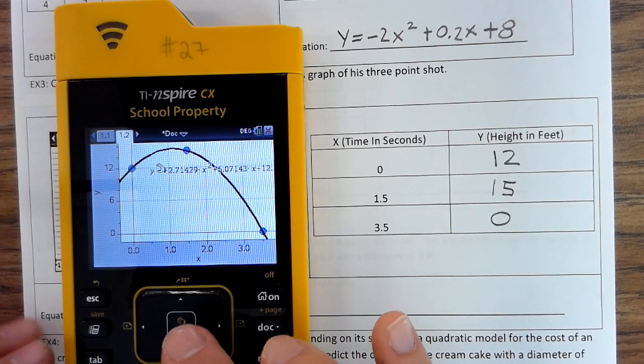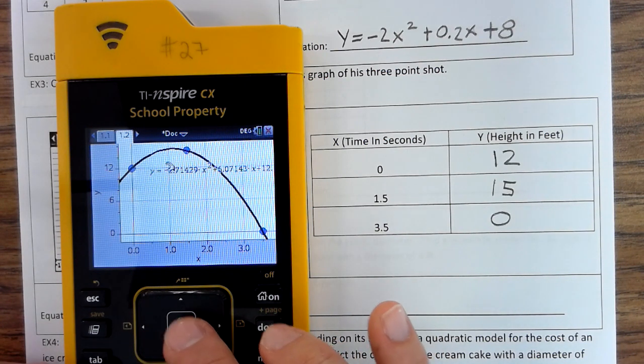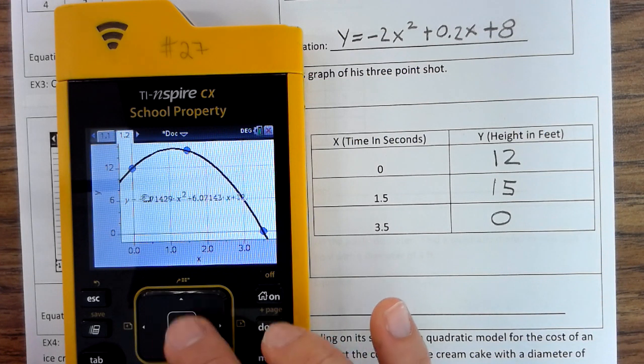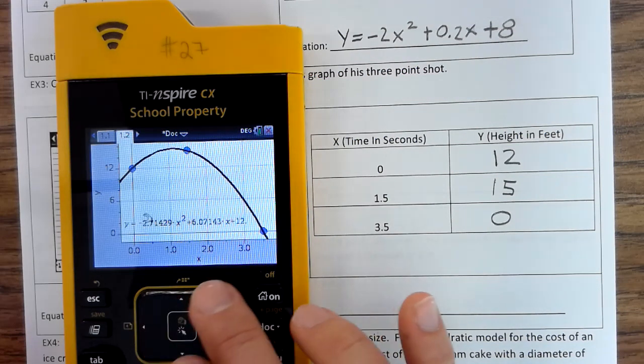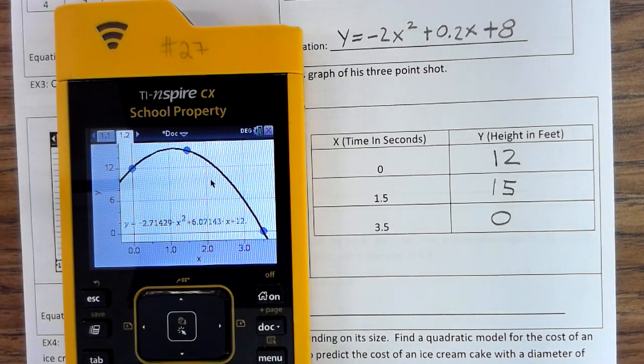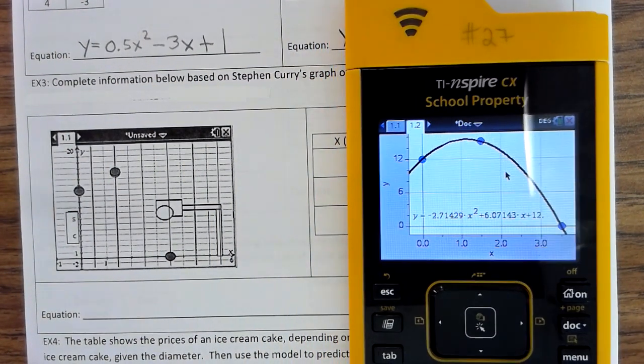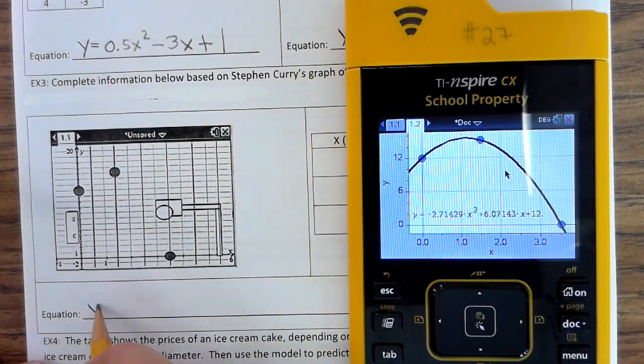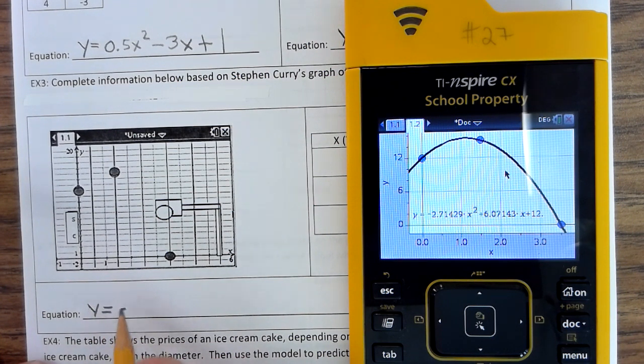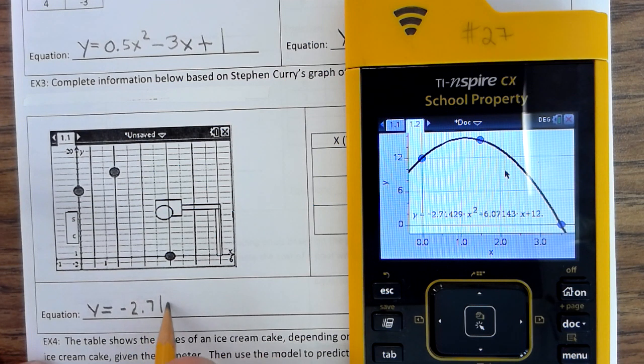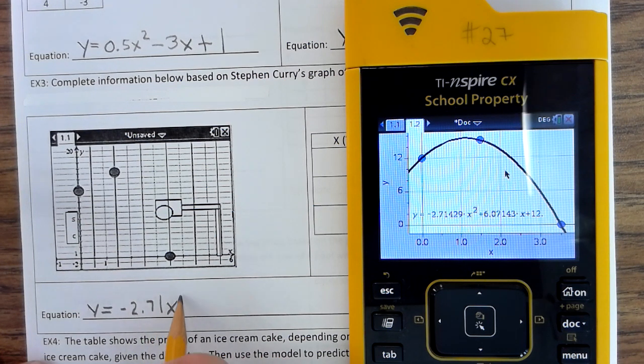Now, we're going to round each of those numbers at two decimal places, but I'm going to move my cursor. Ctrl-click to grab it, move it down here, click to move it away. And so the equation of Steph Curry's shot is Y equals negative 2.71X squared plus 6.07X plus 12.